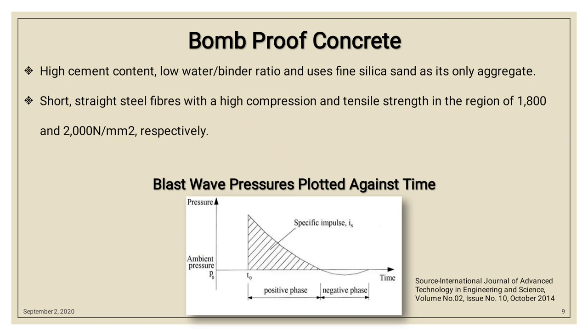Now coming to the important topic of bomb-proof concrete. To make bomb-proof concrete, there are some important points to keep in mind: high cement content, low water-binder ratio, and use of fine silica as the only aggregate. This graph shows how blast wave pressure travels with time, displaying a positive phase and a negative phase, where the area under the positive phase shows the specific impulse. Short and straight steel fibers with high compressive and tensile strength in the region of 1800 and 2000 Newton per mm² respectively are also used.